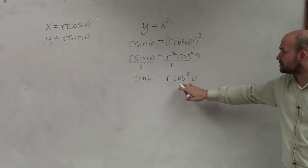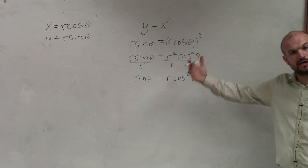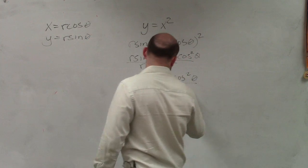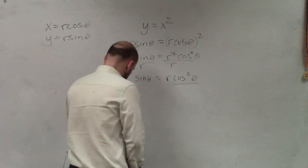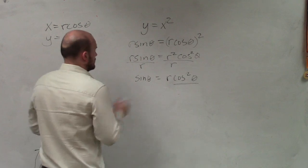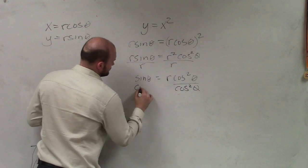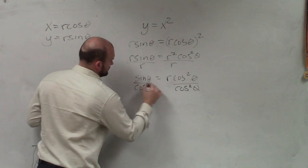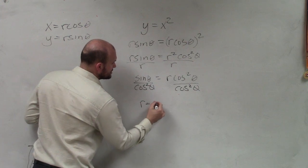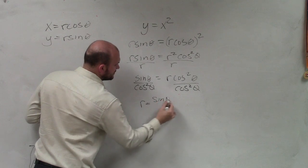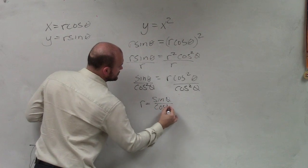To now solve for cosine or to solve for r, I need to undo the multiplication of cosine squared. So I divide by cosine squared of theta. And I get r equals sine of theta divided by cosine squared of theta.